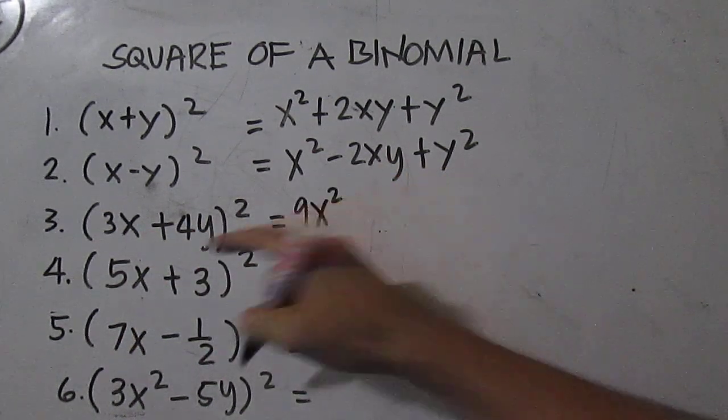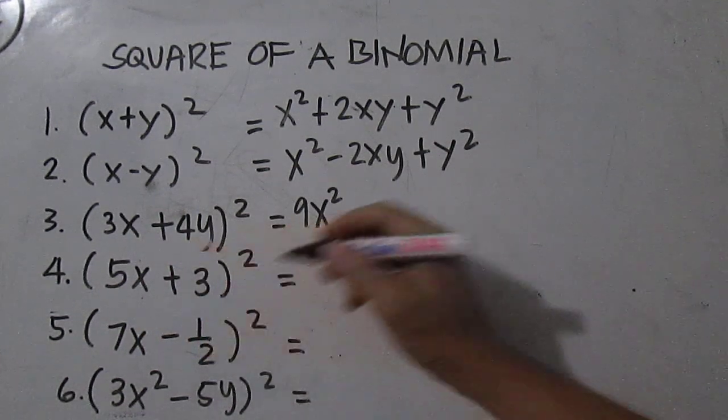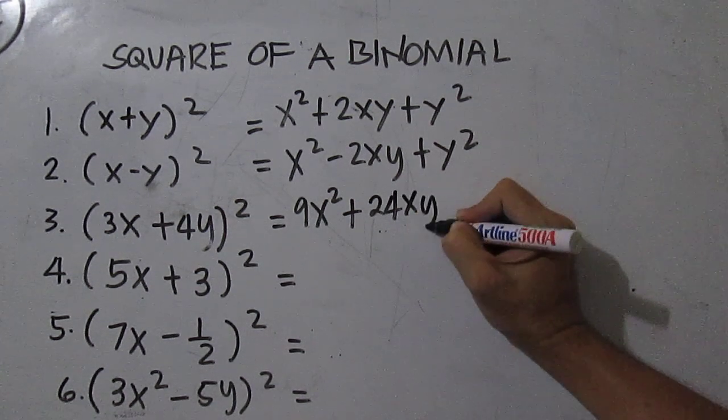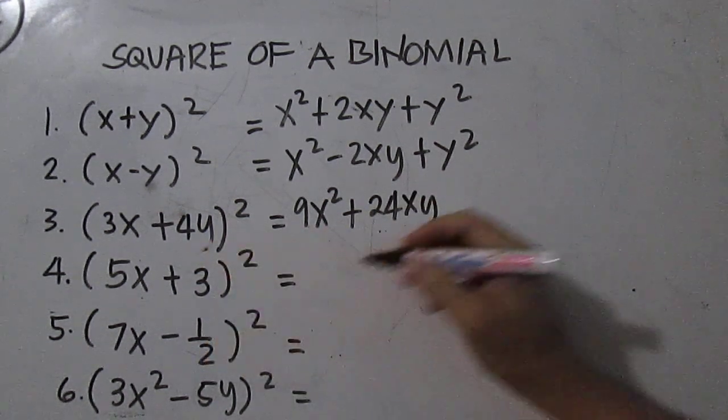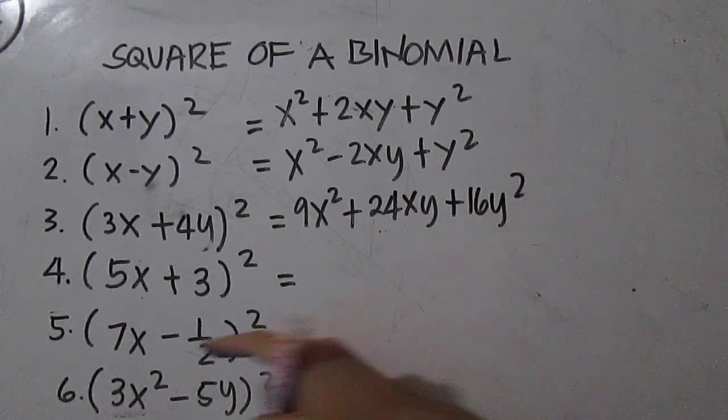Then 3x times 4y is 12xy, times 2 you have 24xy. Then 4y times 4y is 16y squared. Number four: